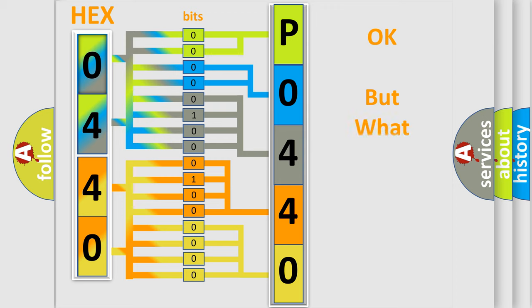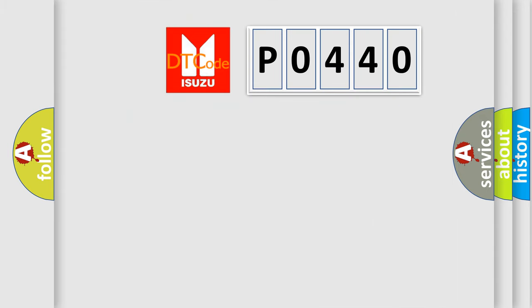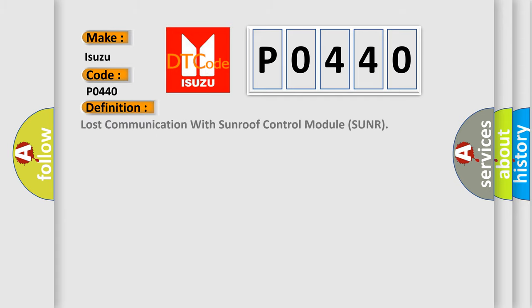The number itself does not make sense to us if we cannot assign information about what it actually expresses. So, what does the diagnostic trouble code P0440 interpret specifically for ISUZU car manufacturers? The basic definition is: lost communication with sunroof control module (SUNR). Here is a short description of this DTC code.